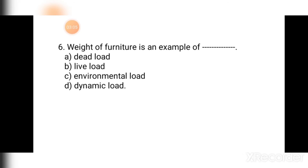Question number six: Weight of furniture is an example of — (a) dead load, (b) live load, (c) environmental load, (d) dynamic load. Since you can shift furniture — its position and magnitude can change — this is an example of live load. The correct answer is (b) live load.